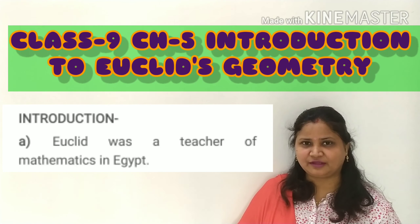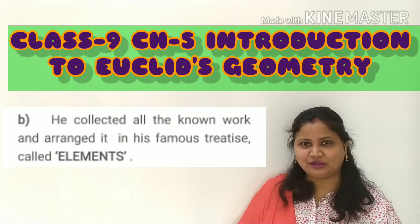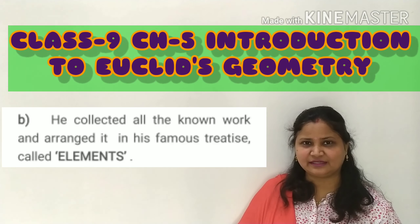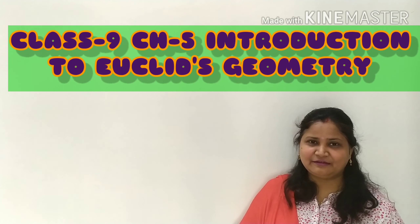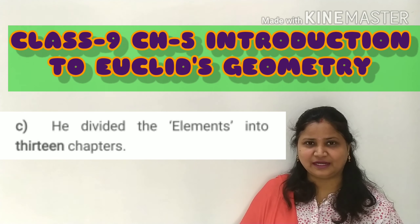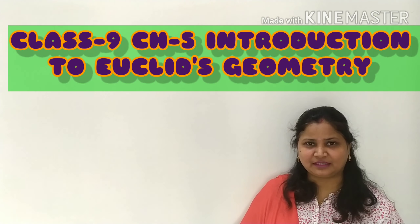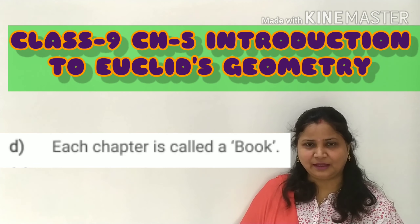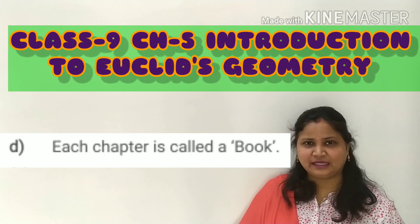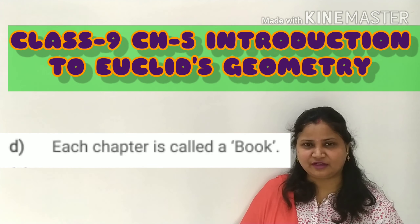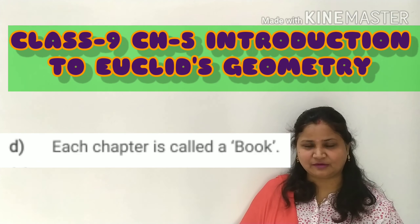Euclid was a famous mathematician at Alexandria. He collected all the known work of mathematics in his famous treatise called Elements. He divided Elements into 13 chapters and each chapter was known as a book. In this book he gave many definitions, many axioms, postulates, etc. We will discuss about it.